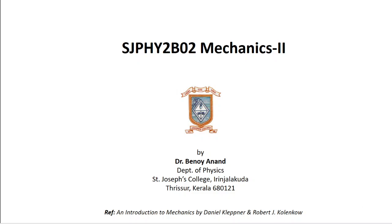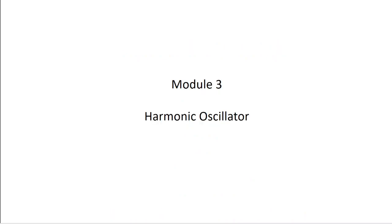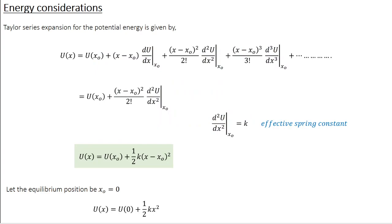Hello, welcome to the course SJPHY2B02 Mechanics 2. The contents of this course are taken from an introduction to mechanics by Kleppner and Kolenko. We will continue to discuss topics from module 3, the harmonic oscillator. In the last class, we set up and solved the equation of motion for a simple harmonic oscillator. In today's class, let's derive the expressions for its kinetic and potential energies.